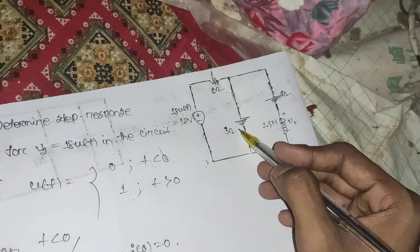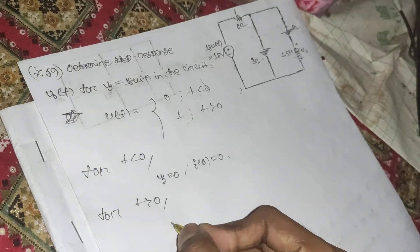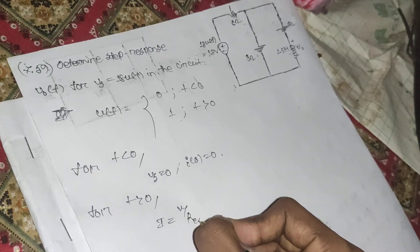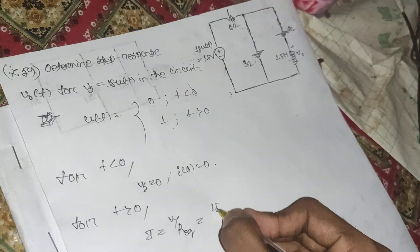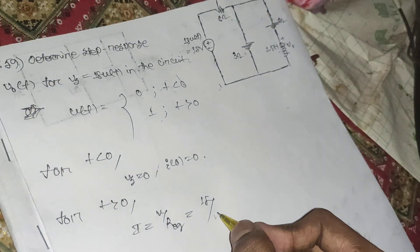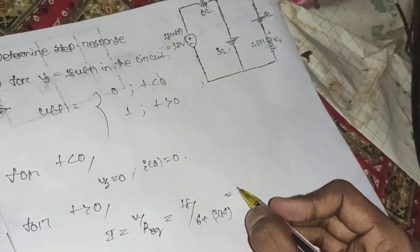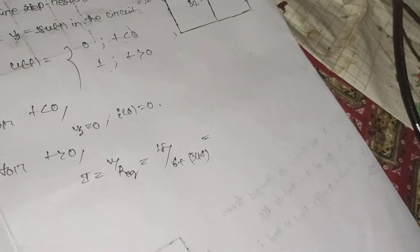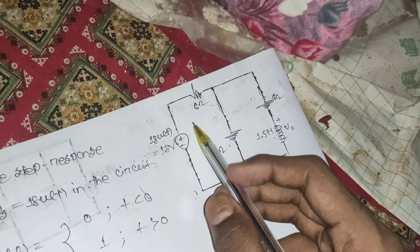The equivalent resistance is 4 in parallel with 3. The total current i equals V over R_eq, so i = 18 divided by (6 + 3∥4). This gives a total current of approximately 2.33 amperes.